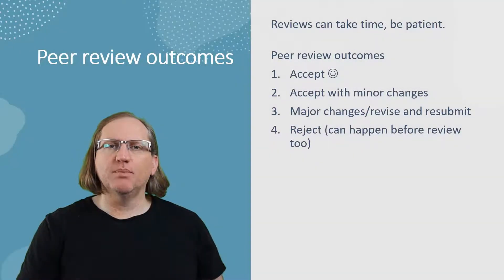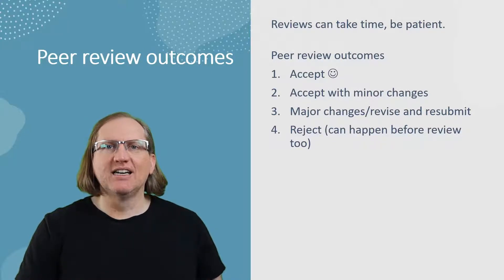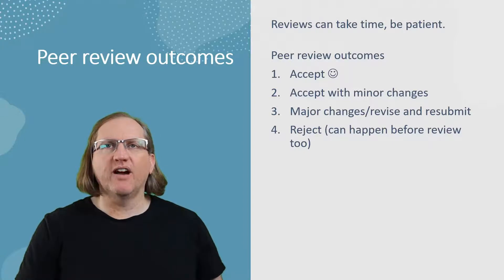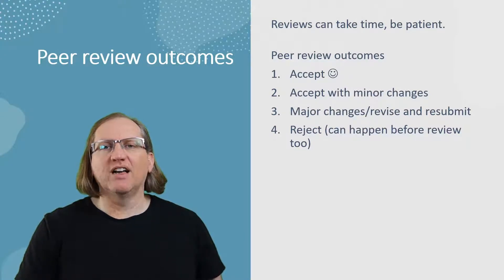One of the most important distinctions of academic publishing is the peer review process. The peer reviewers will have looked at your article. Reviews can take time, so you need to be patient. But what will happen is you will normally get one of four different outcomes.